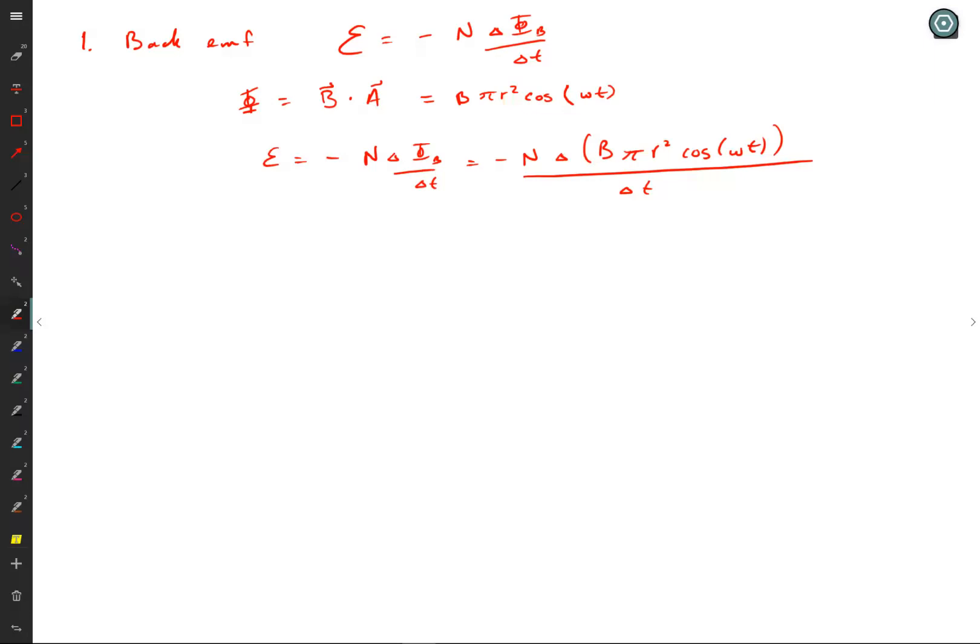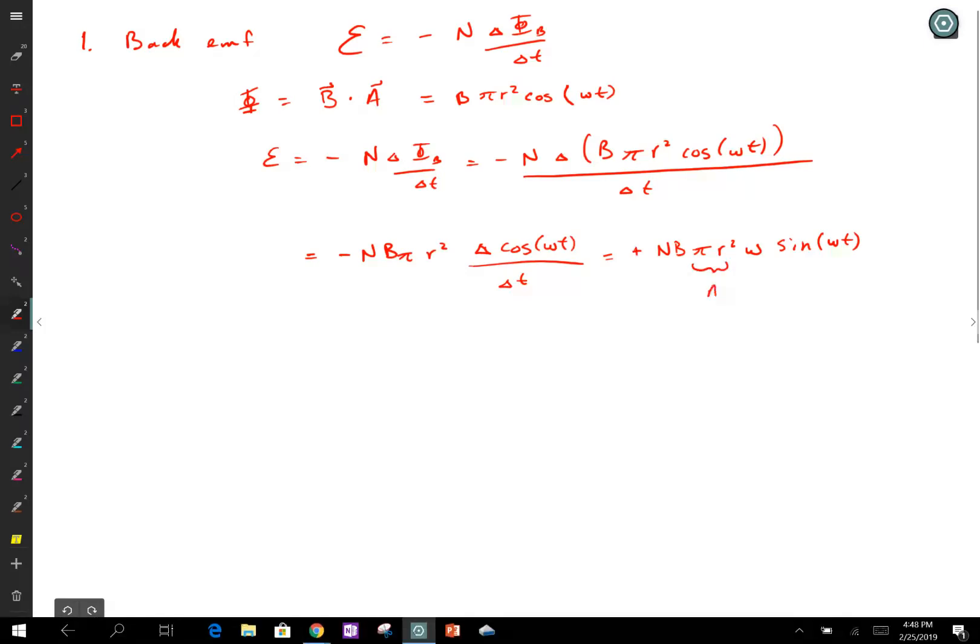But the magnetic field isn't changing, it's constant. And pi isn't changing, it's constant. And radius isn't changing, it's constant. Time is changing with time. So what this becomes is equals minus N B pi r squared change in cosine of omega t over change in time. Now, this is really a derivative, and it really requires you to use calculus. But when you do calculus, this gives you minus N B pi r squared omega sine of omega t. Actually, there's another minus sign, so it's plus. This here, of course, was area, so it's N B A omega sine of omega t.